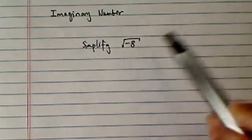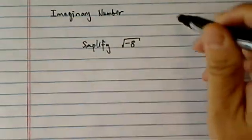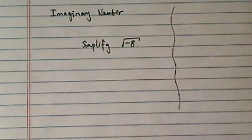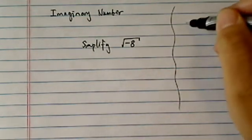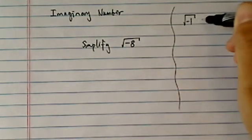We're asked to simplify radical of minus 8. Imaginary number is one of those weird odd things. At the beginning, first look at it, you go, huh, why would you want to do that?